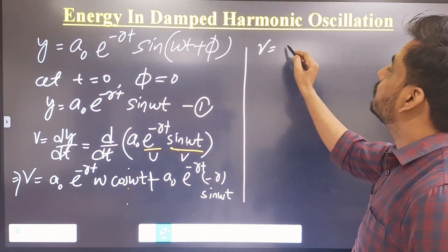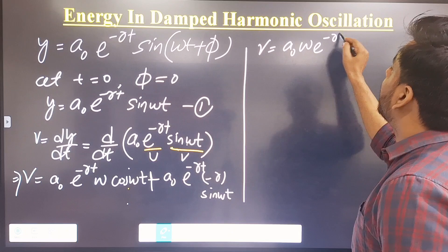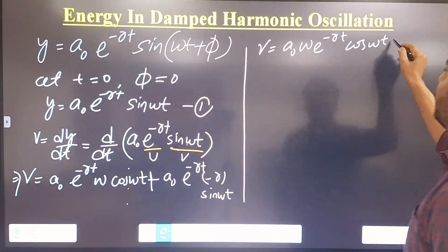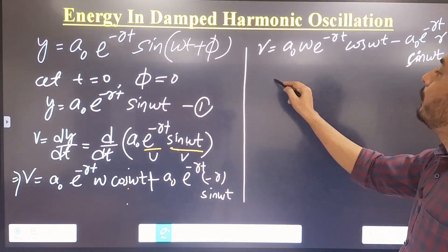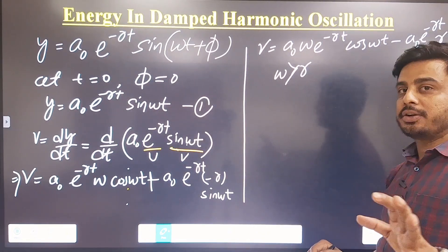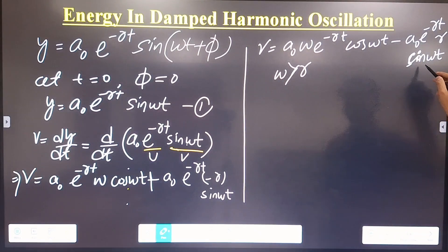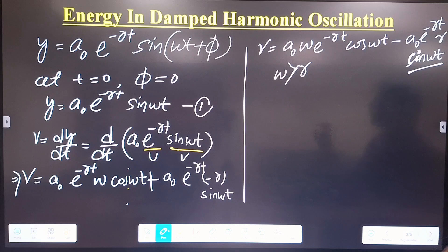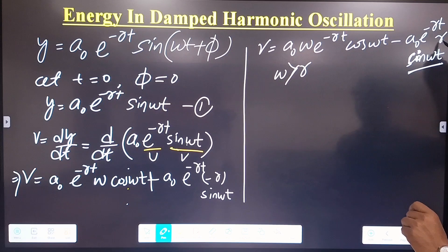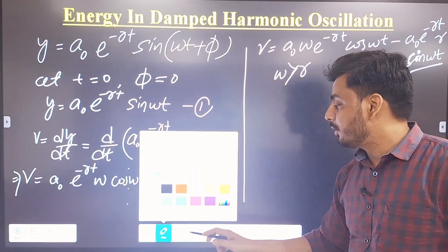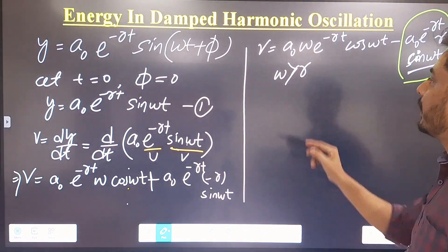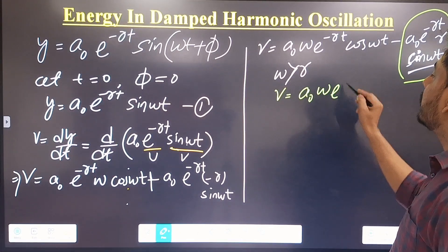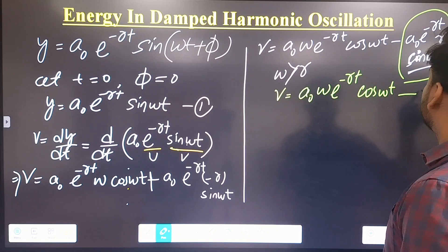So velocity equals a-naught ω e to the power minus rt cos(ωt), minus a-naught r e to the power minus rt sin(ωt). In the under-damped condition, ω is always greater than or equal to r, so r is a very small quantity. The trigonometric function sin(ωt) varies from minus 1 to plus 1, so multiplying two small quantities means the second term is negligible. Therefore the final formula is v equal to a-naught ω e to the power minus rt cos(ωt). This is equation number two.